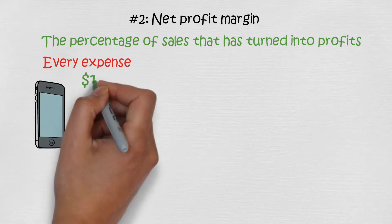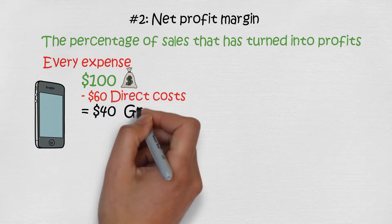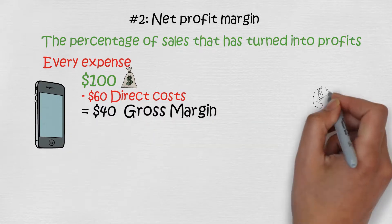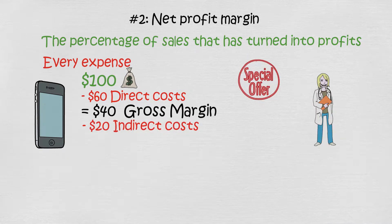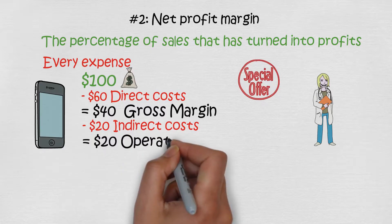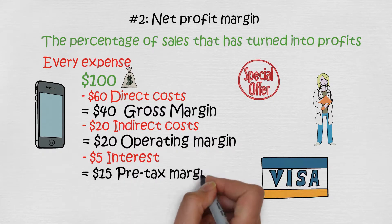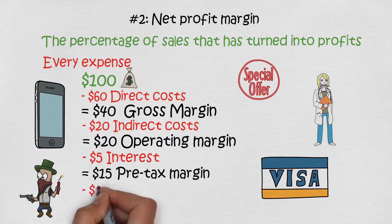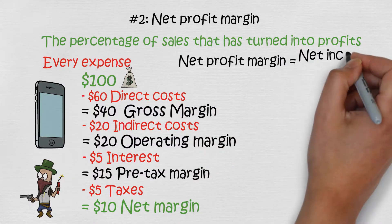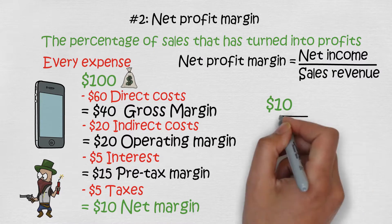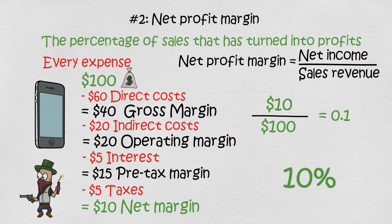Let's imagine we are selling phones again. First we make $100, then we deduct direct costs of $60, leaving $40 as gross margin. Now we pay indirect costs like research and marketing — let's say $20 — leaving $20, which is the operating margin. We pay $5 interest on debt, leaving $15 as the pre-tax margin. After paying $5 in taxes, we're left with a net margin of $10. Net profit margin is $10 divided by $100 equals 10%.